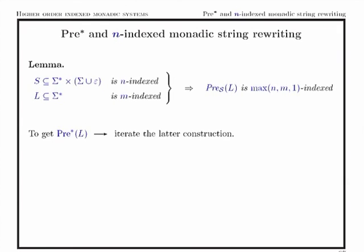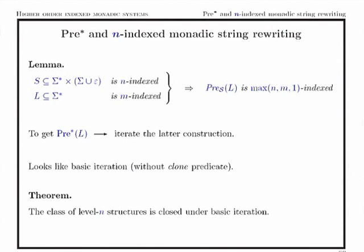If we want to rewrite repeatedly, we have to iterate this construction. Looking at this iteration, it resembles basic iteration — we don't need the clone predicate in this case. We need the following result to apply here: the class of level-n structures is closed under basic iteration. This is very different from full iteration, which causes us to climb in the hierarchy; here we stay at the same level. The clone predicate thus seems essential — the extension by Mucznik is what gives additional expressive power.